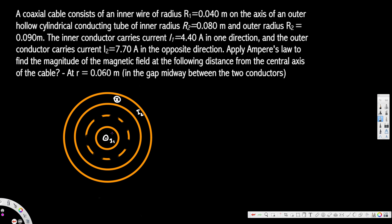Let's choose different colors to show the distances. The first one is 0.04 m radius, the second one is 0.06 m - our point of interest, the third one is 0.08 m, and the last one is 0.09 m.